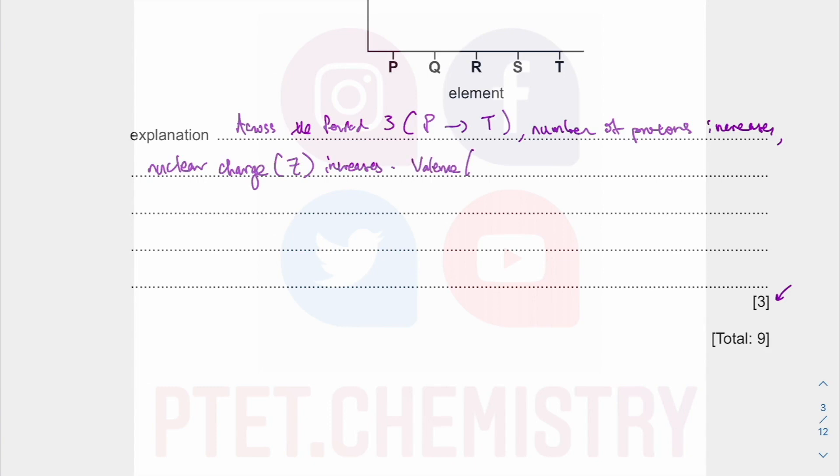Valence, or you can say outermost shell electrons. So valence electrons refer to outermost shell electrons. Continuously fill in the same shell because we are talking about the same period. Period 3. So n equal to 3, the third shell. So shielding is roughly or approximately unchanged because you are filling in the same shell.